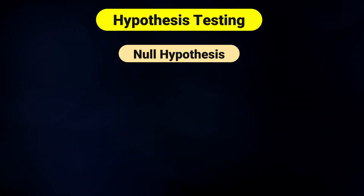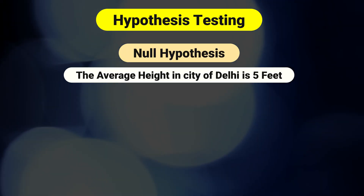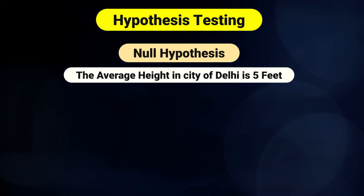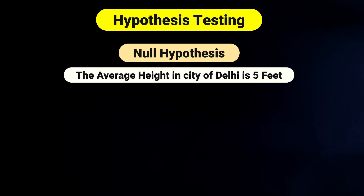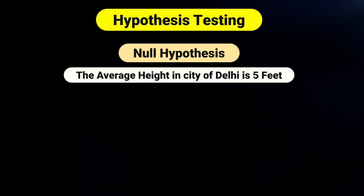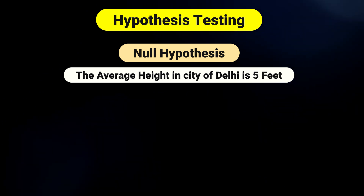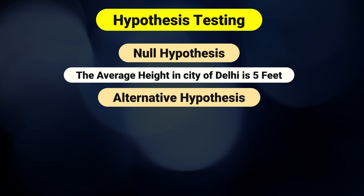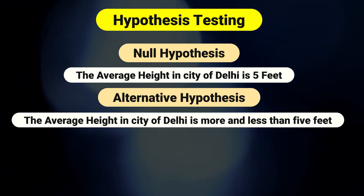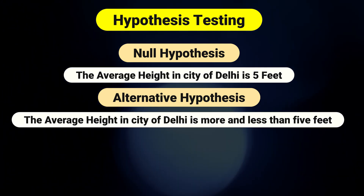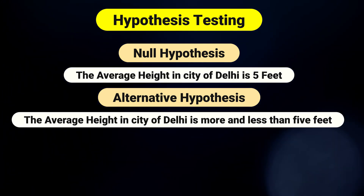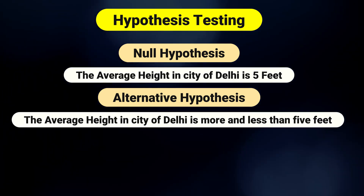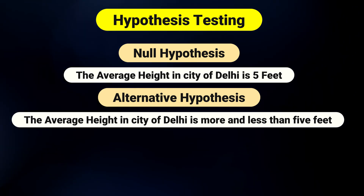Let me explain this in simple words. Let's say you have an assumption that the average height in the city of Delhi is 5 feet. This becomes your assumption or the null hypothesis. Your alternate hypothesis, let's say, is that the average height in the city of Delhi is more or less than 5 feet.